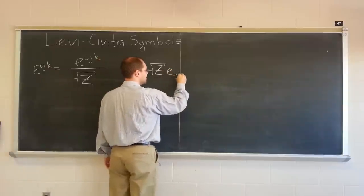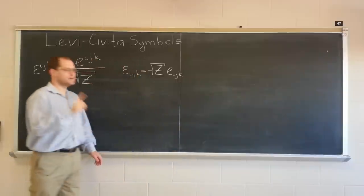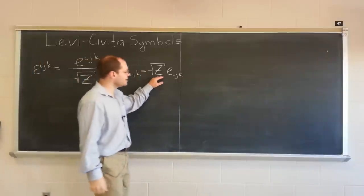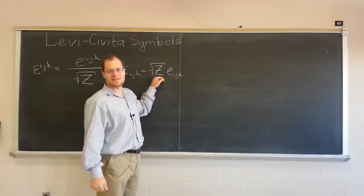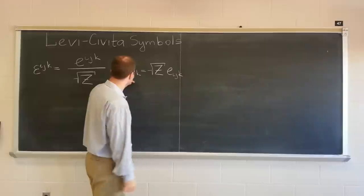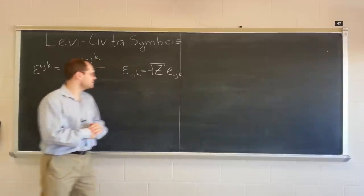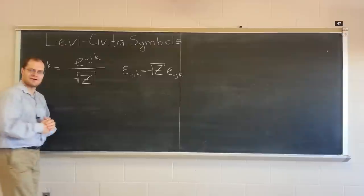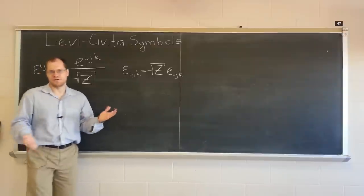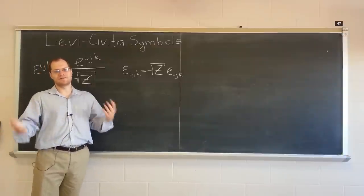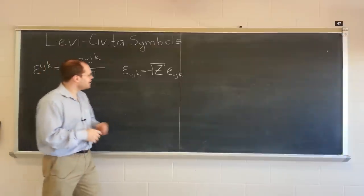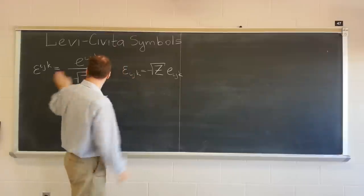Because this permutation symbol is a relative tensor of weight one. So we have to combine it as a product with a relative tensor of weight negative one to end up with a regular tensor. So these two objects are tensors. So beautiful. That's almost all there is to it. Except I will show you a few relationships that these satisfy.